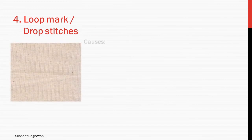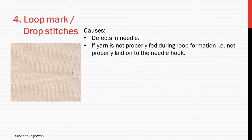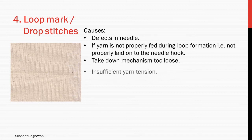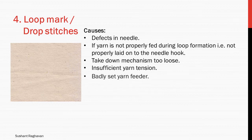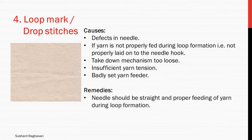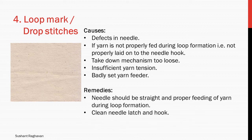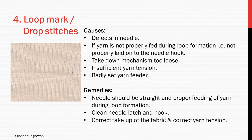Loop mark or drop stitches. Causes: defects in needle; if yarn is not properly fed during loop formation, that is, not properly laid onto the needle hook; take-down mechanism too loose; insufficient yarn tension; badly set yarn feeder. Remedies: needle should be straight with proper feeding of yarn during loop formation. Clean needle latch and hook. Correct take-up of the fabric and correct yarn tension.